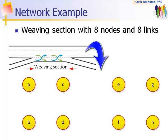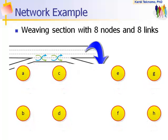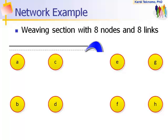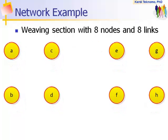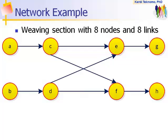Suppose we have a simple network of a weaving section with eight nodes which we give them name A, B, C, D up to H and eight links.